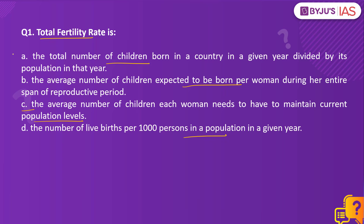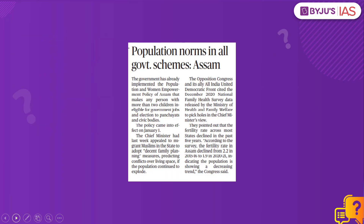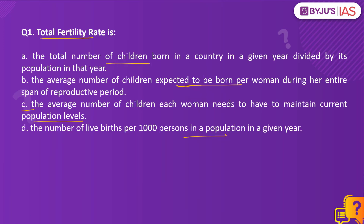First, let us have a look at the context. This article in the Hindu newspaper talks about the population norms in government schemes in Assam. This article also has a reference to the fertility rate. Now let us discuss the answer. The right answer to this question is: total fertility rate is the average number of children expected to be born per woman during her entire span of reproductive period.